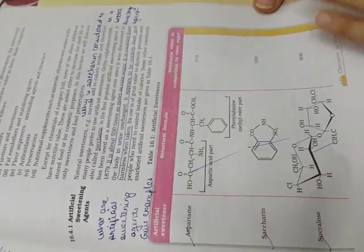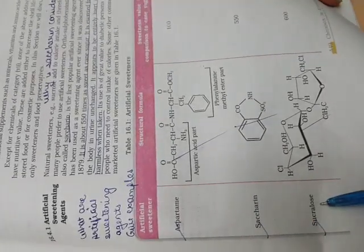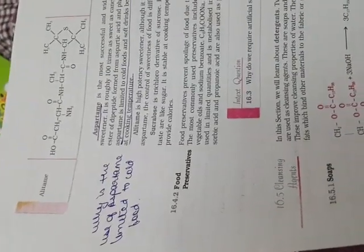Next, artificial sweetening agents. Memorize four examples: aspartame, saccharin, sucralose, and alitame. Out of this, saccharin is the oldest one.